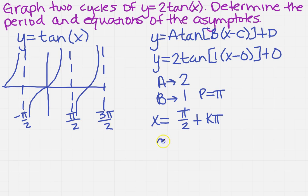So for two cycles, I would go from negative pi over 2 to 3 pi over 2. And the easiest way, remember, to do the cycles is to actually draw out your asymptotes so that you can see where a cycle takes place.